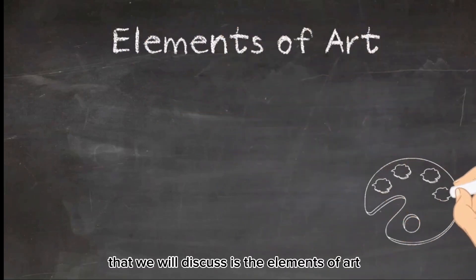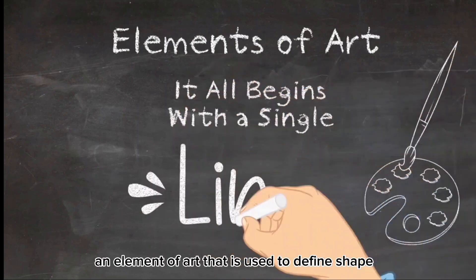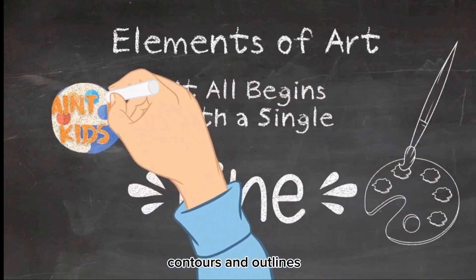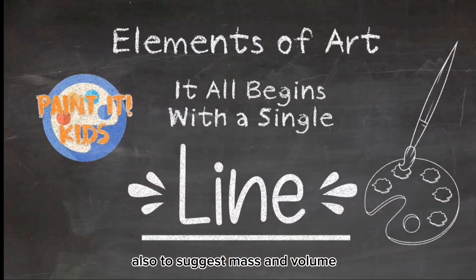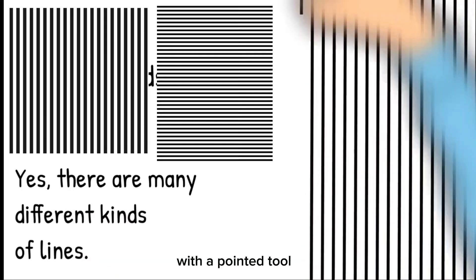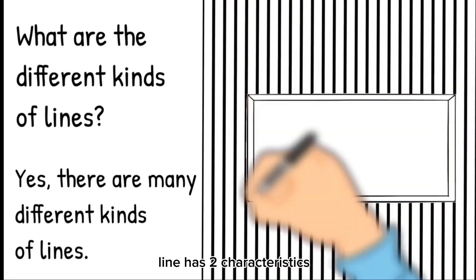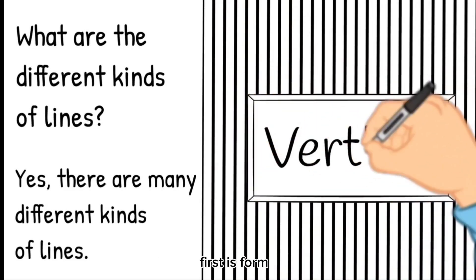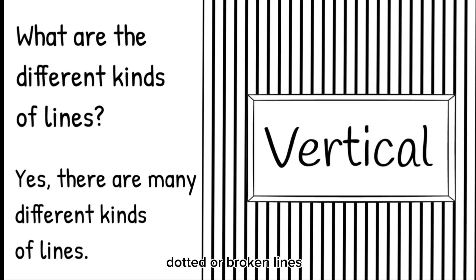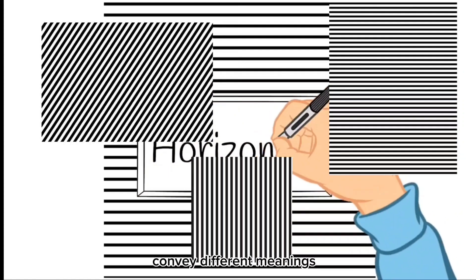The first element of art we will discuss is lines. A line is an element of art used to define shape, contours, and outlines, and also to suggest mass and volume. It may be a continuous mark made on a surface with a pointed tool, or implied by the edges of shapes and forms. Line has two characteristics: form — it can be curved, dotted, or broken — and direction, which can be vertical, horizontal, and diagonal.